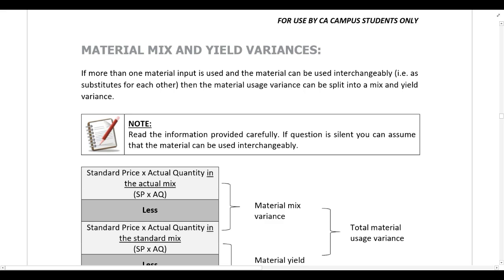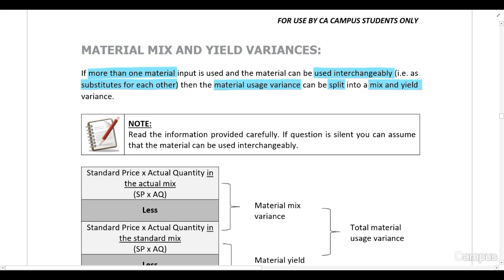So far we've looked at the material price variance and the material usage variance. However, if more than one material input is used in production and those materials can be used interchangeably — one can substitute for the other — then it's possible to split the material usage variance into a mix variance and a yield variance. For example, a company making biscuits uses oil and milk; if we use less oil we can use more milk and vice versa, so because they are interchangeable, the usage variance can be split into mix and yield.